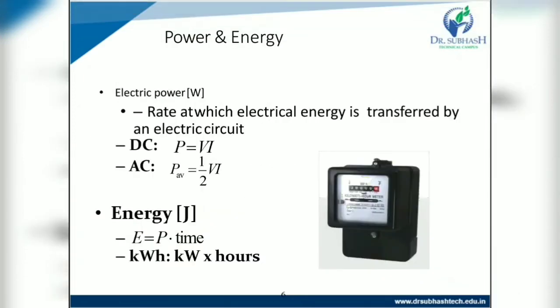Power and energy: electrical power is denoted by capital W. It is the rate at which electrical energy is transferred by an electrical circuit. For DC, power equals V times I. For AC, average power equals (1/2)VI. Energy E equals power P multiplied by time. Kilowatt-hour is the unit of energy, kilowatt is the unit of power, and time is in hours.